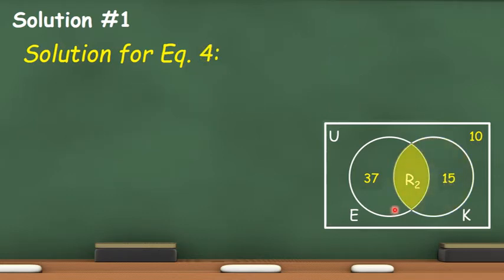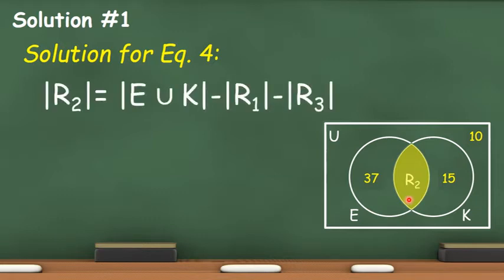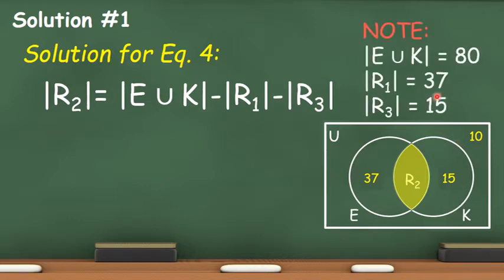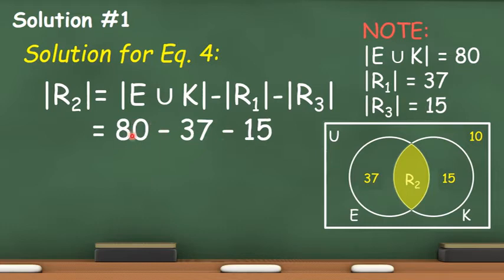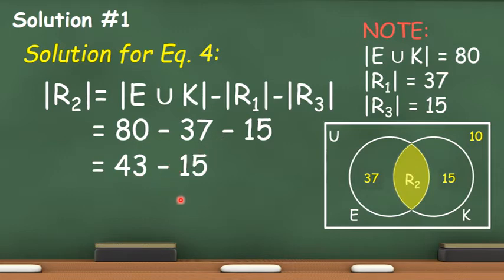Lastly, we are going to solve for the number of elements in R sub 2, which is the intersection of set E and set K. The values we need are E union K which is 80, R sub 1 which is 37, and R sub 3 which is 15. Substituting the values, we have 80 minus 37 minus 15. First we subtract 80 and 37 to get 43, then 43 minus 15 is 28, meaning the intersection of E and K has 28 elements.